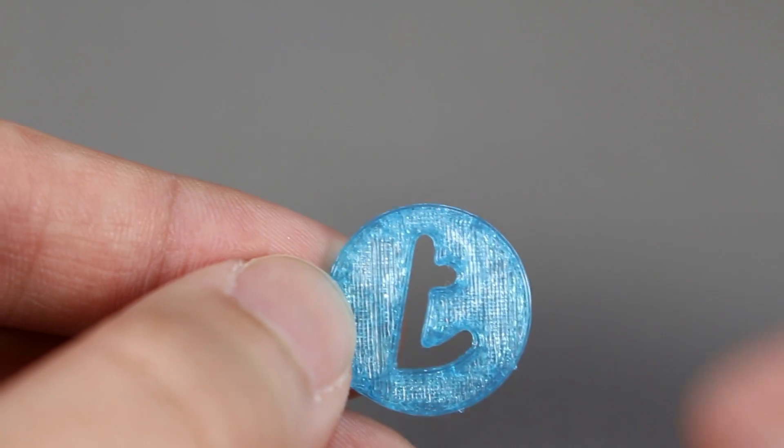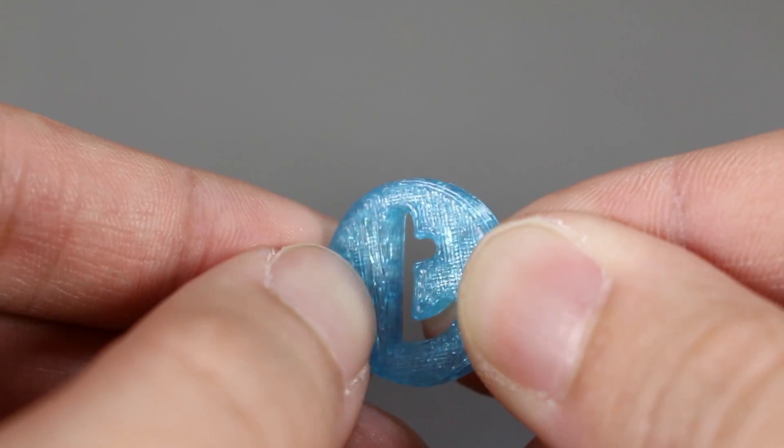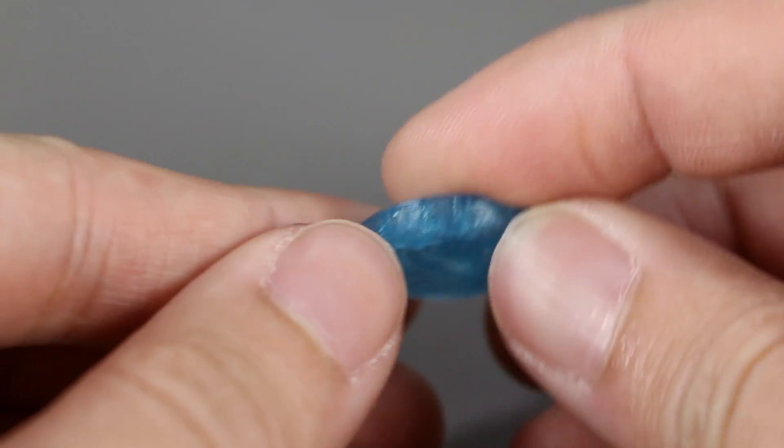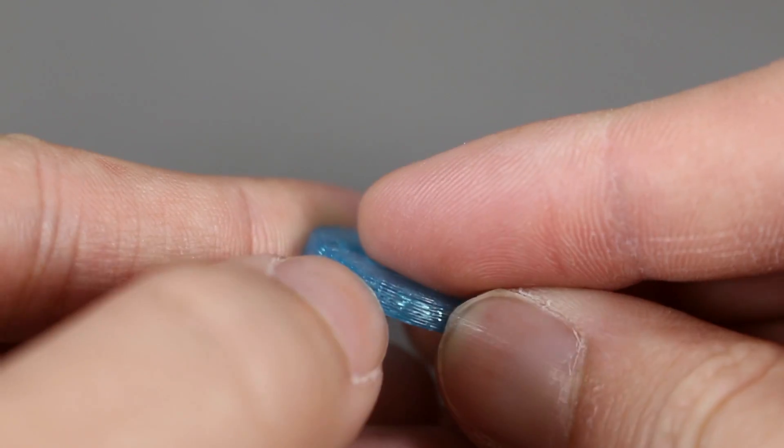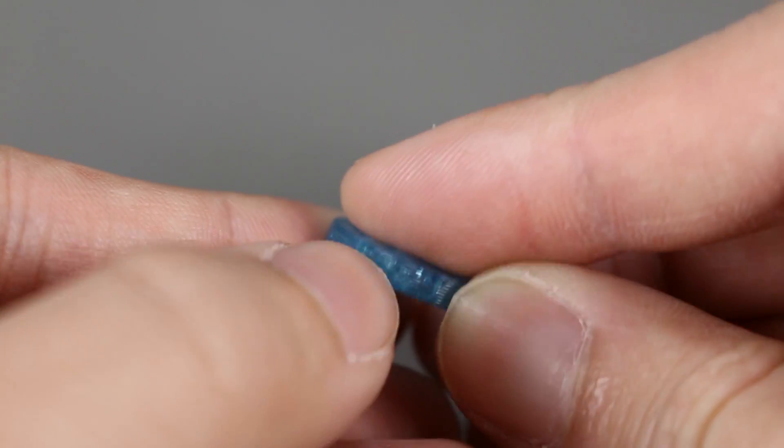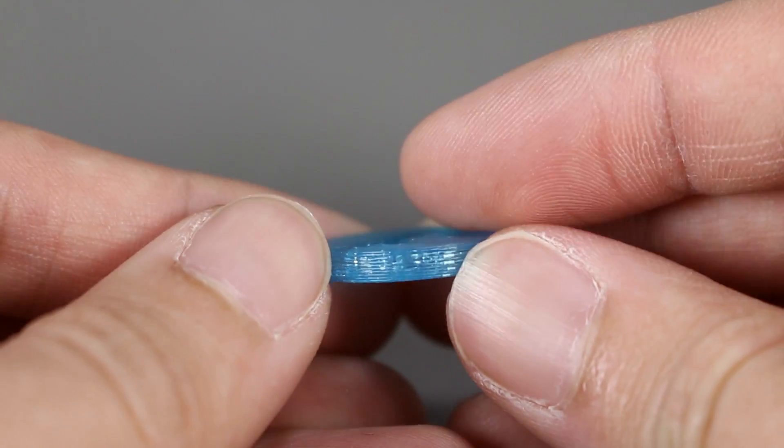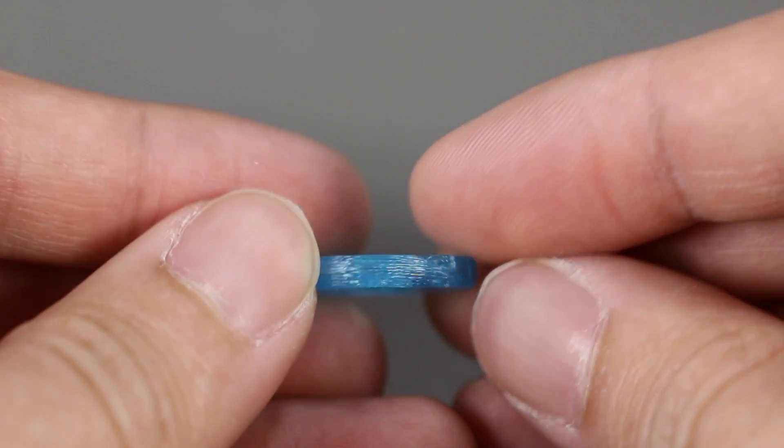Now, let's see. The surface feels the same as before we dumped it in. We can still see and feel the lines on the side of the print, and it just doesn't feel any smoother than before.